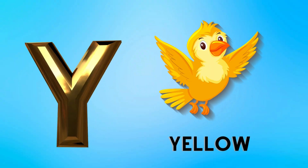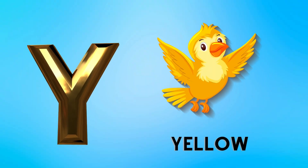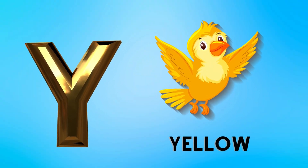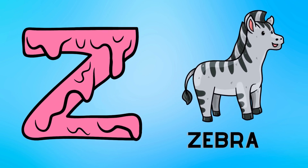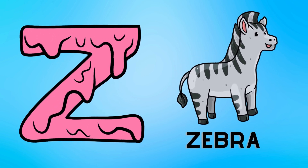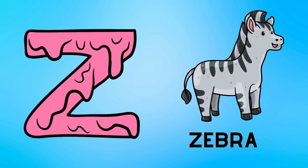Y is for yellow, ye-ye-yellow. Z is for zebra, z-z-zebra.